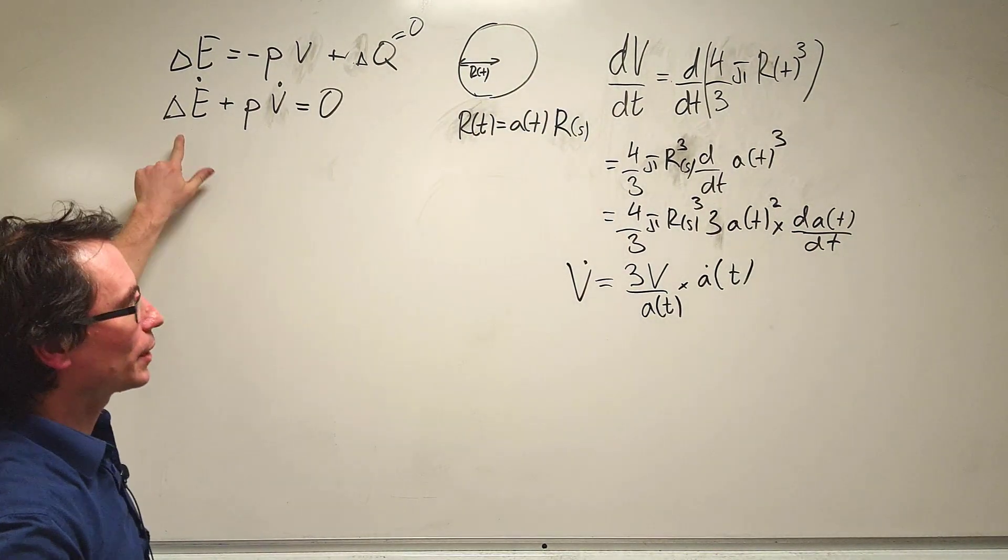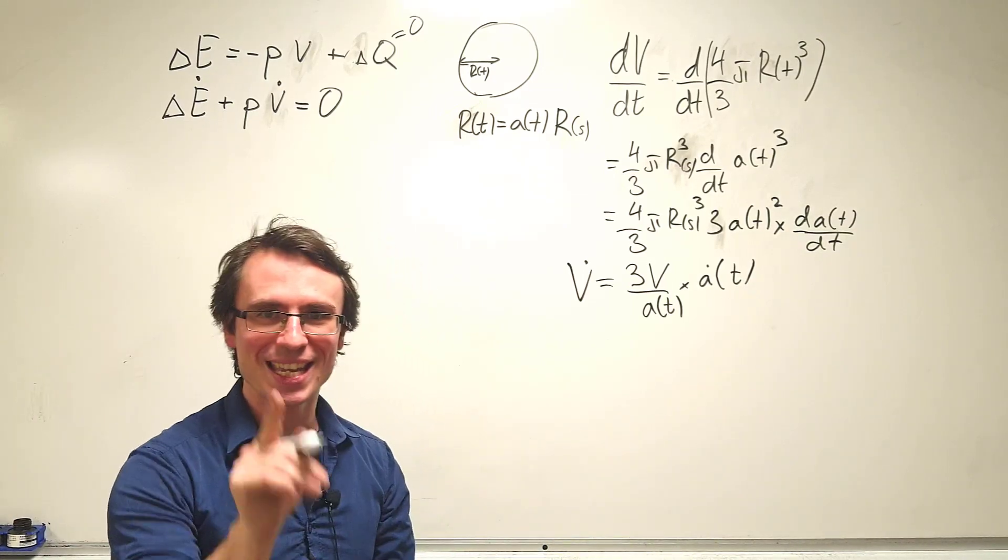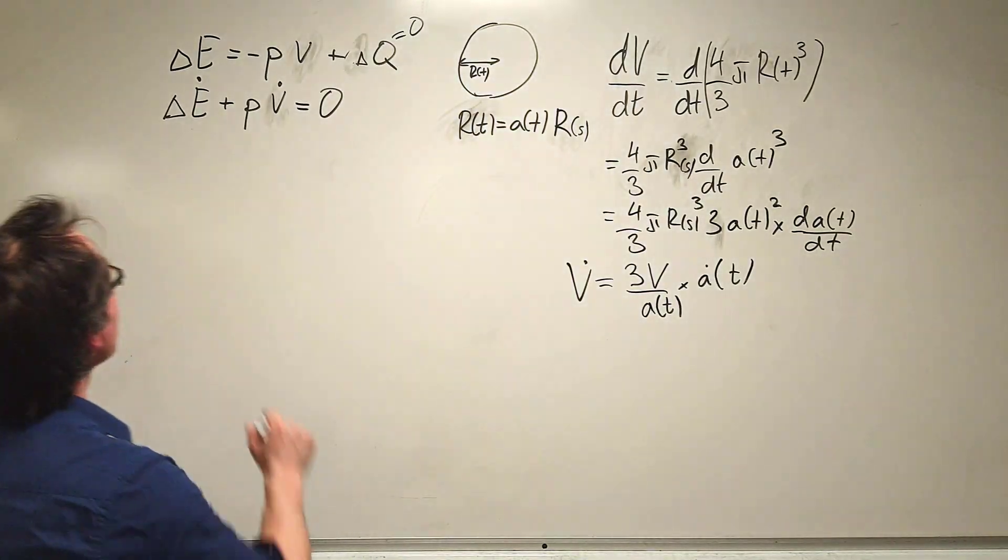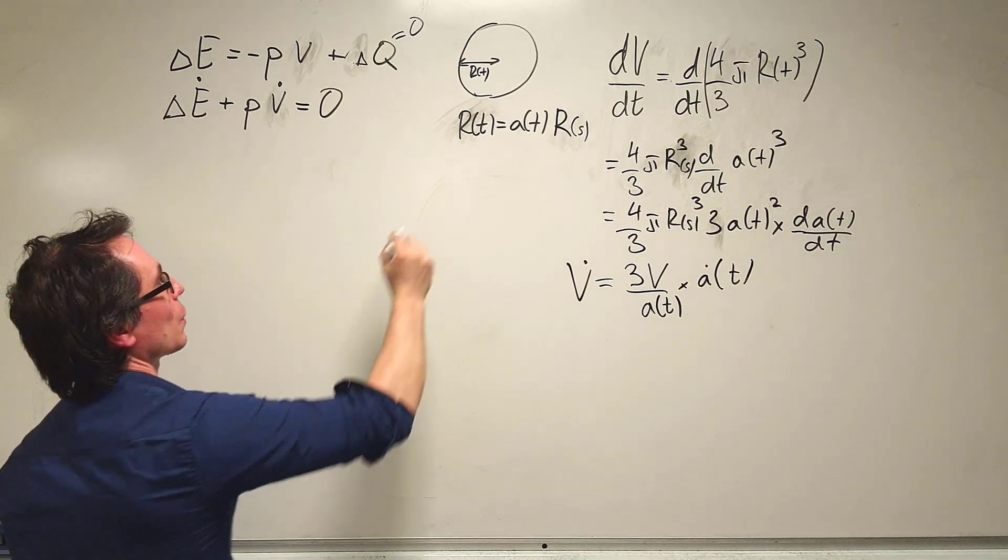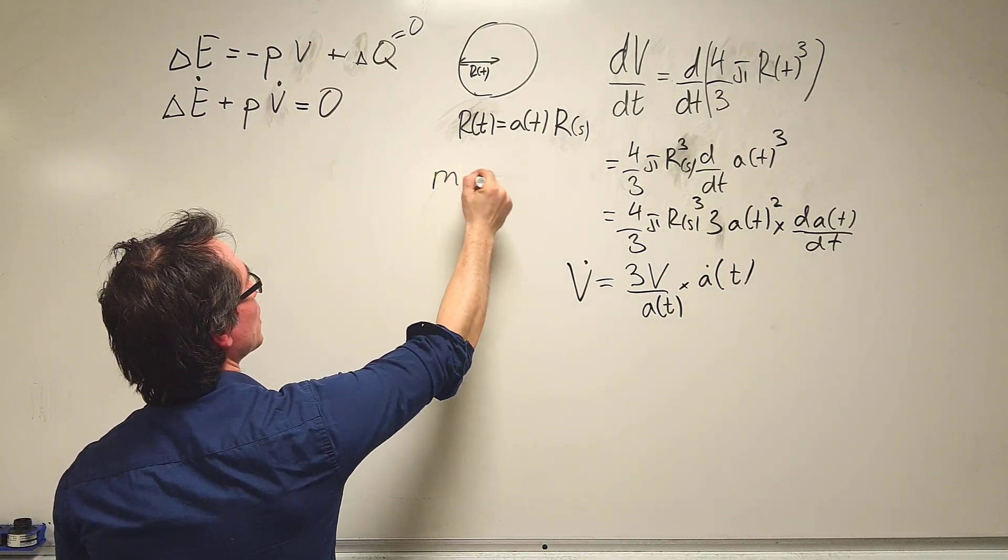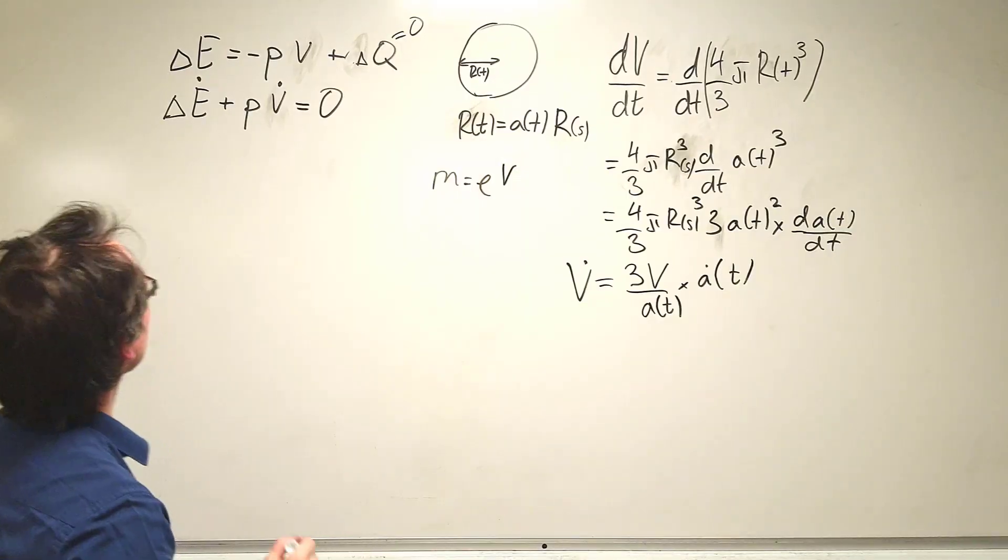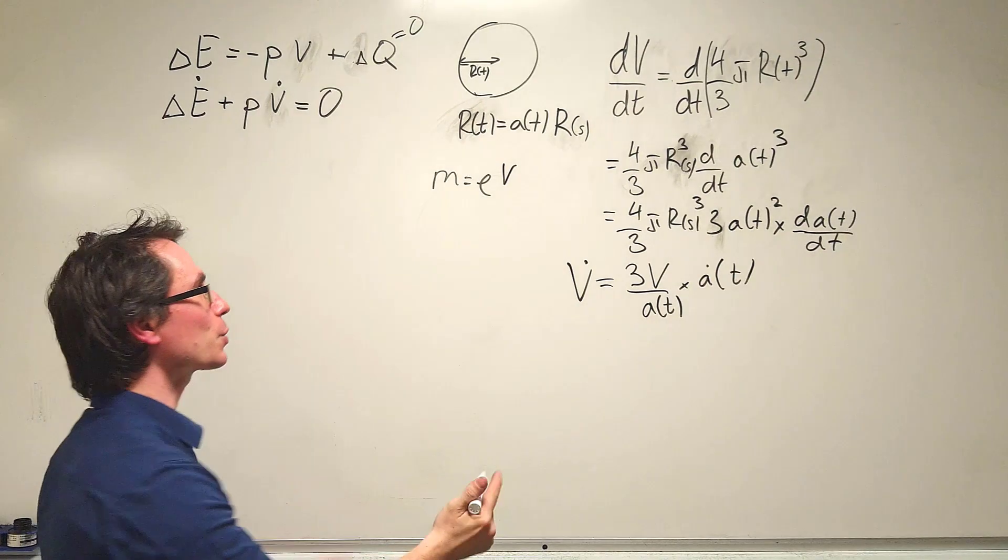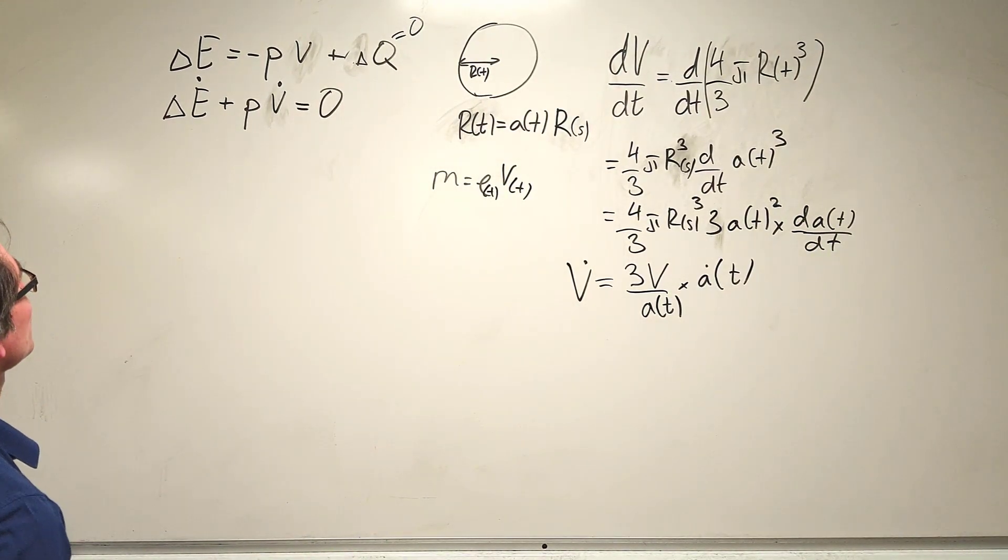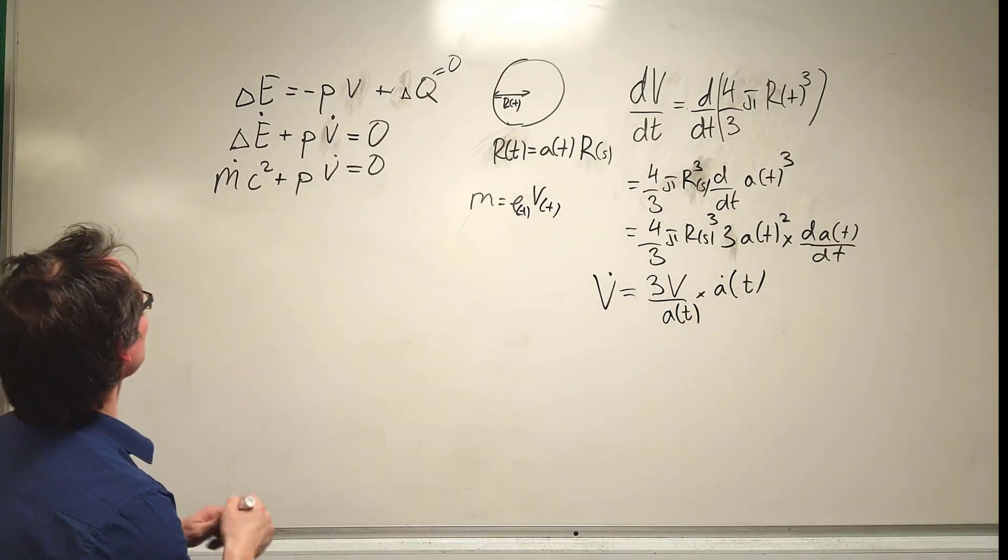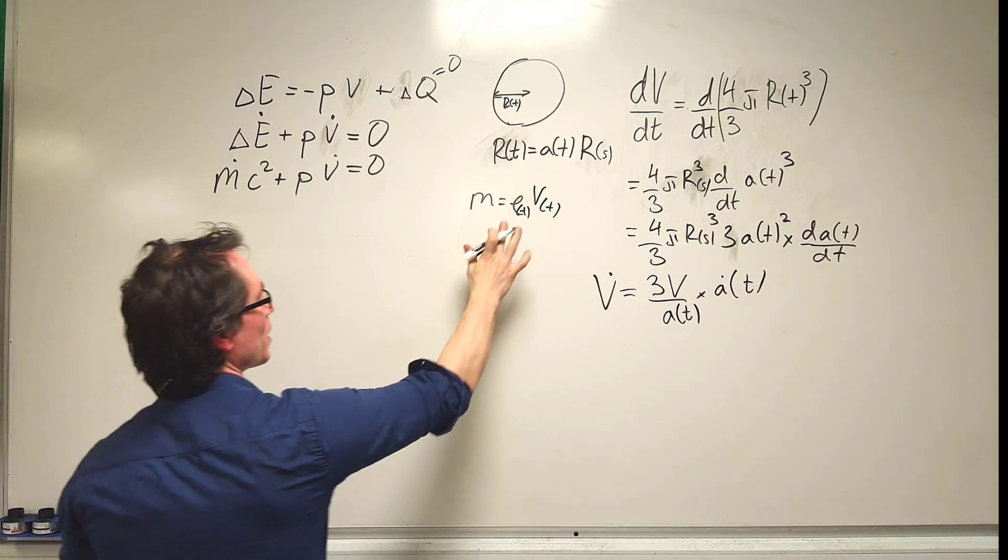Let's plug this back into this equation, and we're going to use one of my favorite equations: E equals mc squared. The change of energy will be equal to mc squared, but remember mass equals density times volume, and in the expansion of the universe, both are functions of time.